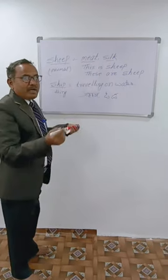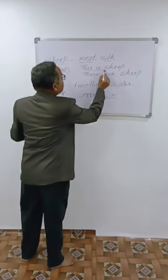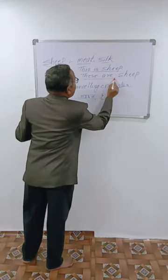Silk - it makes silk, wool - it eats grass. This is sheep, these are sheep.